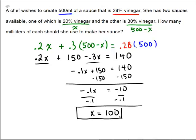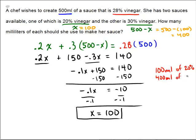Remember, x equals 100 is only the 20% liquid. So how much of the other part did we have? Well, 500 minus x is 500 minus 100, which is 400. So the final answer is: use 100 milliliters of the 20% vinegar and 400 milliliters of the 30% vinegar.